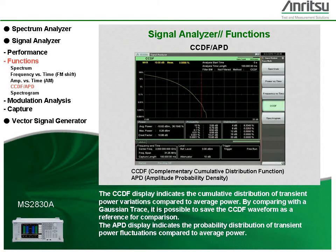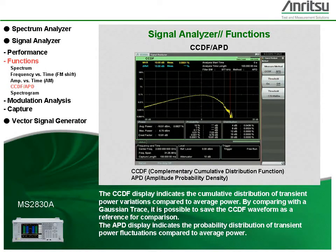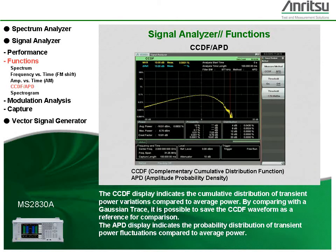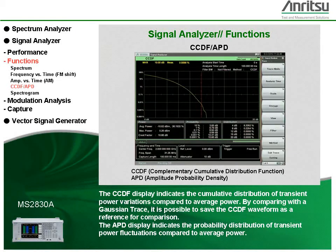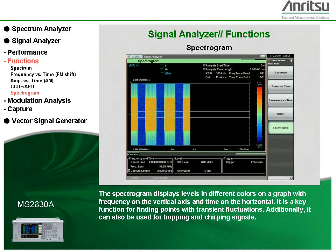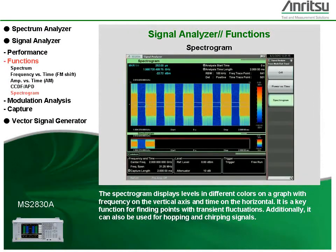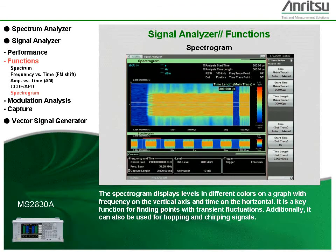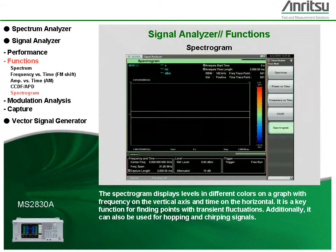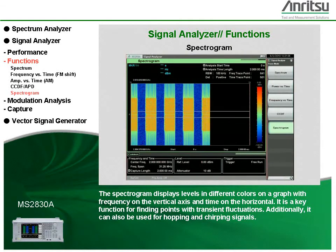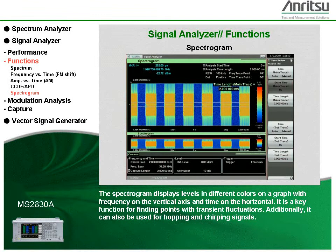The CCDF display indicates the cumulative distribution of transient power variations compared to average power. By comparing with a Gaussian trace, it's possible to save the CCDF waveform as a reference for comparison. The APD display indicates the probability distribution of transient power fluctuations compared to average power. The spectrogram displays levels in different colors on a graph with frequency on the vertical axis and time on the horizontal. It's a key function for finding points with transient fluctuations, and can also be used for hopping and chirping signals.